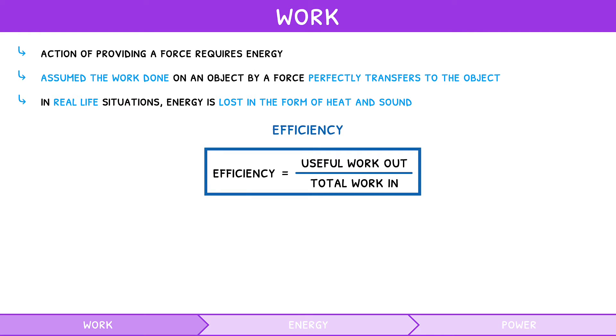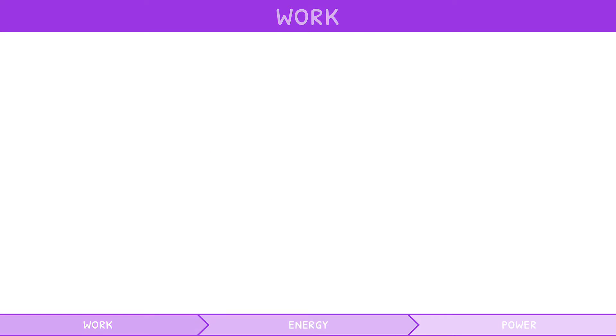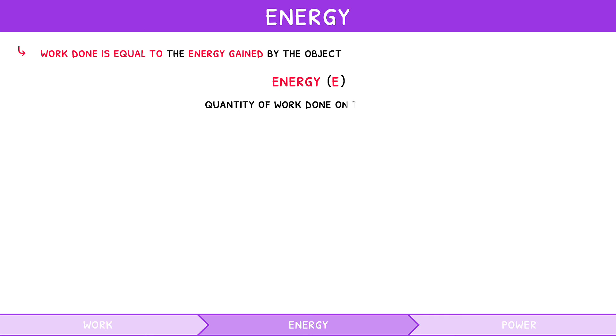We now know how much energy a force requires by the work done on the object. But how does this relate to the energy of the object? The work done on an object to move it is also equal to the energy the object has gained. The object's energy is thus defined as the quantity of work done on the object, also measured in joules.